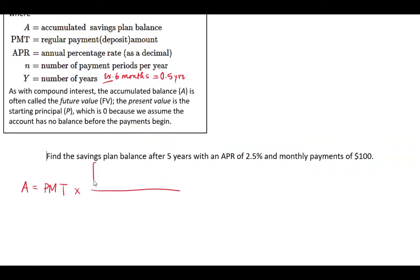So it's 1 plus the APR divided by n, raised to the power n times Y, minus 1, and then close the parentheses and divide it by APR divided by n. Now in this problem you're making monthly payments of $100, so that's your PMT. I times it by, now I'm going to copy all those values into the formula. I have 1 plus APR - you need to convert it into decimals, move that decimal place to the left, so it's going to be 0.025. And then we have 12 payments, so n will be 12.